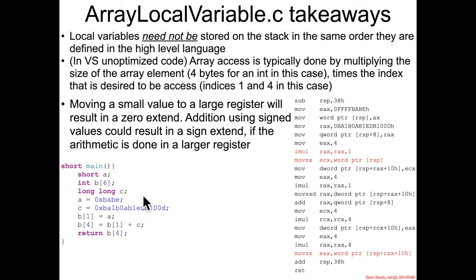So sign extension happens when some smaller value that is signed gets moved into a larger value that's signed, whereas zero extension or essentially truncation happens when this b of 4 gets turned back down from a 32-bit value into a 16-bit value, truncating it down to a short.